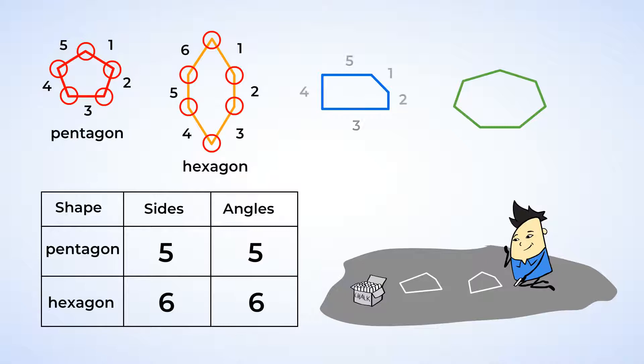And the blue shape has 5 sides and also 5 angles. So it's a pentagon. And finally, let's look at the green shape. 7 sides. This is not a pentagon or a hexagon.